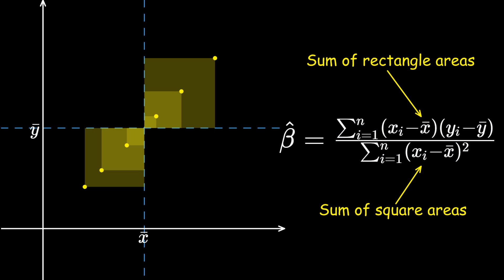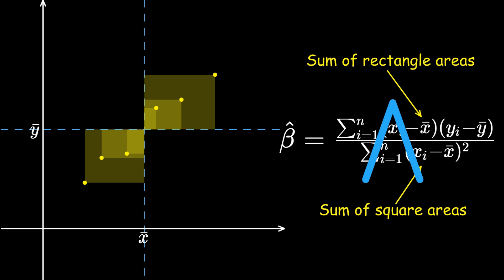If we restore the points to their original positions, notice that the sum of rectangle areas is a bit smaller than the sum of all square areas. This means that their ratio, which gives beta hat, is a number between 0 and 1.